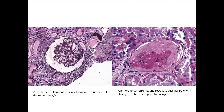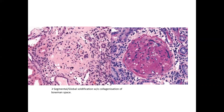As a consequence of changes in the arterioles and arteries, the corresponding glomeruli also show ischemic changes: ischemic wrinkling of the glomerular capillary wall with dilated Bowman's space. As ischemia progresses, the glomerular tuft shrinks and retracts to the vascular pole, with filling of Bowman's space by collagen — global glomerulosclerosis due to ischemia. Segmental and global solidification of glomeruli can also be seen in longstanding hypertension due to arterial and arteriolar changes.